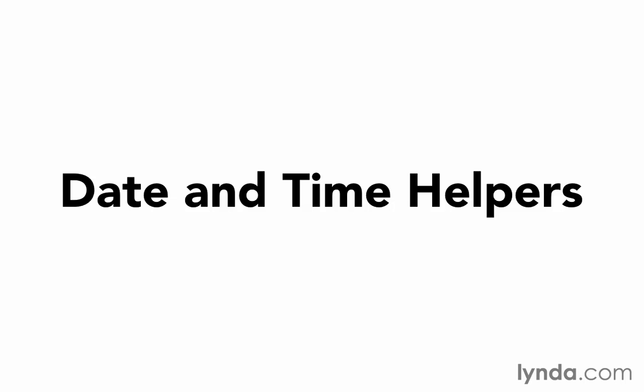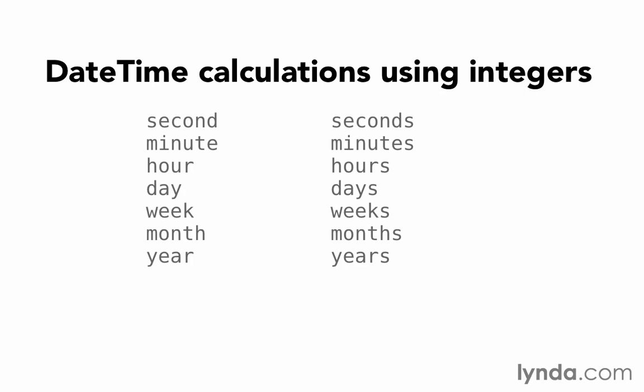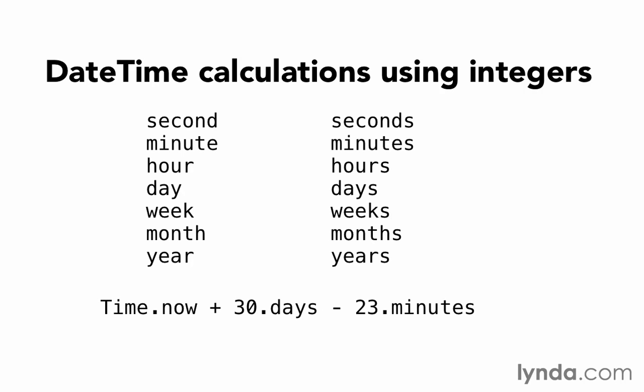Let's get an overview of what methods are available. First, we can call methods on integers in order to assist us with date and time calculations. So for example, we have second, minute, hour, day, week, month, and year, and you can call those on an integer to get the number of seconds that would make up that item.